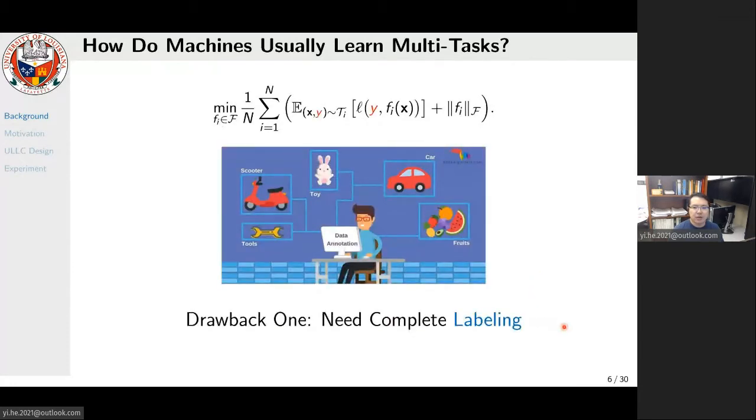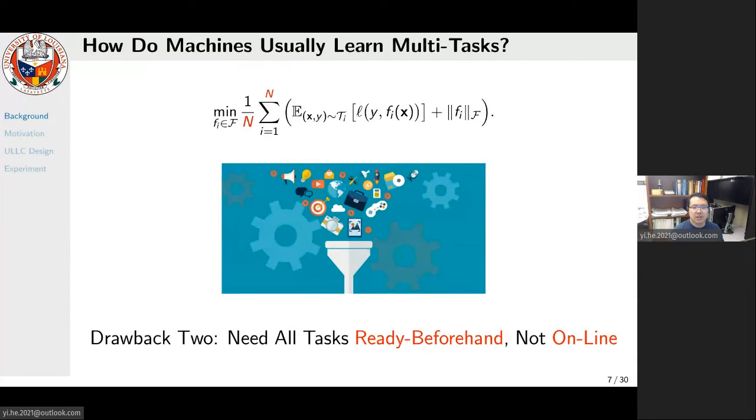However, a prominent drawback of this practice is that it requires complete labels from all tasks, which can only be provided by human laborers. It incurs costly, time-consuming, and laborious efforts. Also, such a multi-task learning objective requires that all tasks be ready beforehand. But in practice, it is often the case that tasks become available in sequence, while new tasks constantly emerge and call for handling. In such cases, current multi-task machines need to be repeatedly retrained from scratch, leading to great waste of computational and time resources.